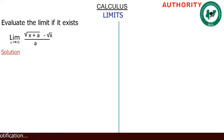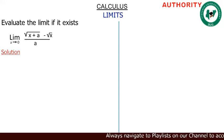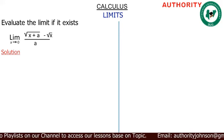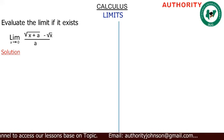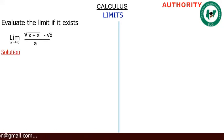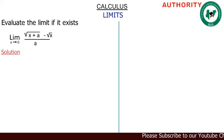To avoid this indeterminate form, we are going to multiply the function by the conjugate over the conjugate. That is, we take the conjugate of the numerator and multiply the entire function by that conjugate over the same conjugate.